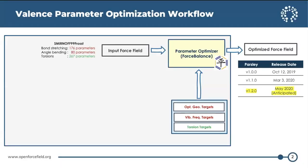Here's a workflow that we use for valence parameter optimization. For valence parameter optimization, we looked at bond stretchings, angle bendings, and also the barrier heights of torsions. The data that we fit to comes from ab initio calculations. The bond stretchings and angle bendings, marked in red in the top left, are informed by ab initio optimized geometries, and the torsion parameters are informed by torsion drive, which is essentially energy versus torsion profiles of constrained ab initio optimized geometries.